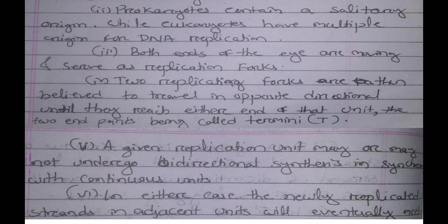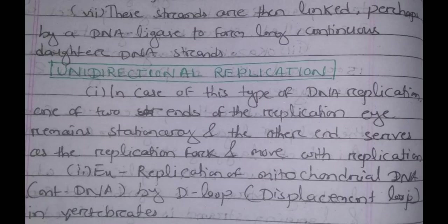Both ends of the replication eye are moving and serve as replication forks. The two replication forks travel in opposite directions until they reach either end of the unit, with the two endpoints called termini. A given replication unit may or may not undergo bidirectional synthesis in synchrony with a continuous unit. The newly replicated strands of adjacent units will eventually meet and are linked by DNA ligase to form long continuous daughter DNA strands.